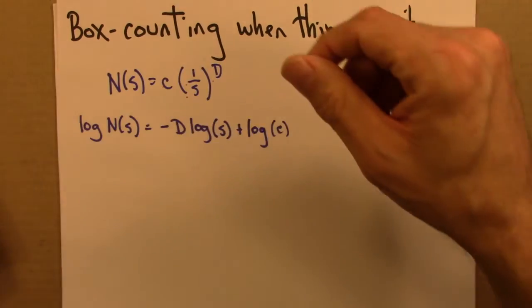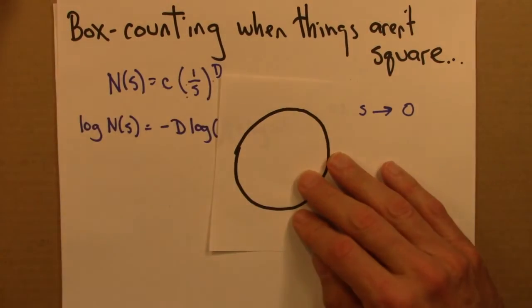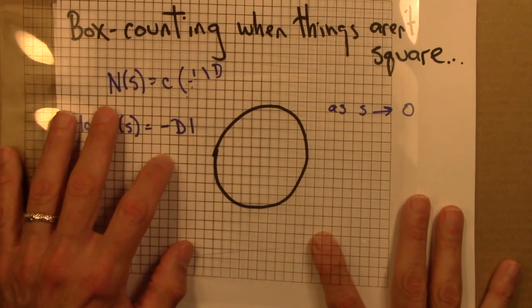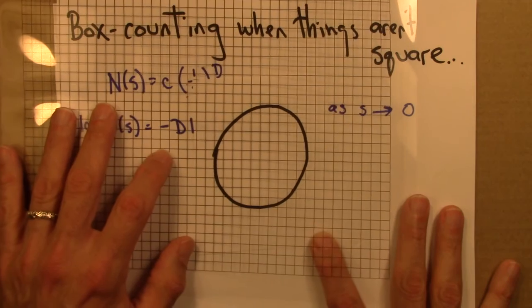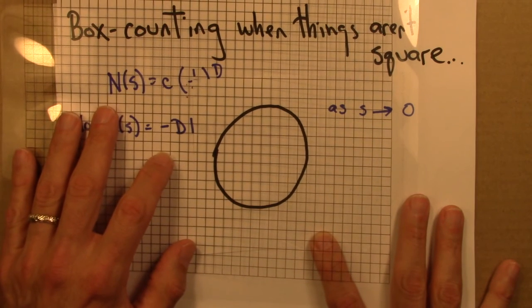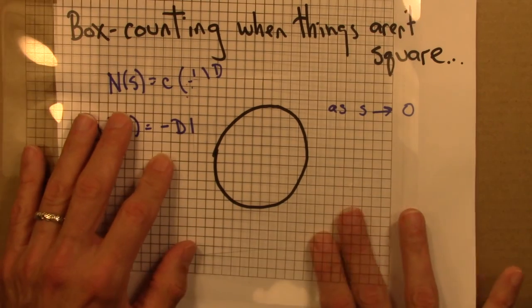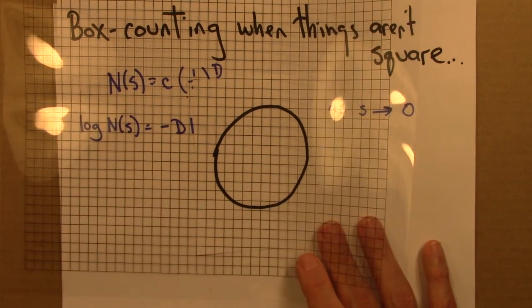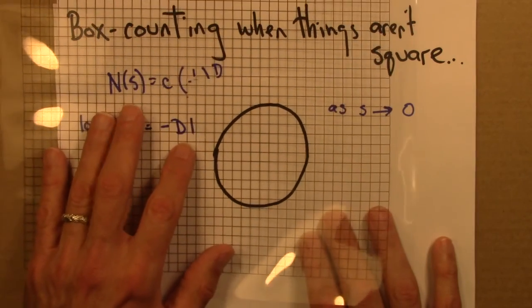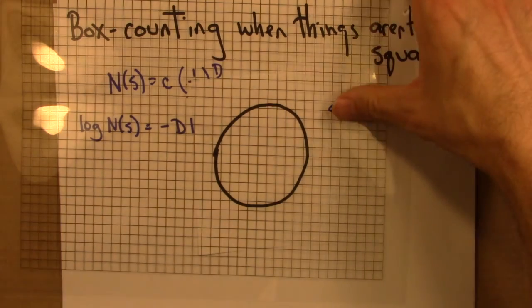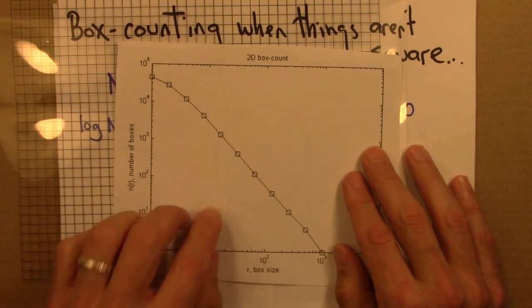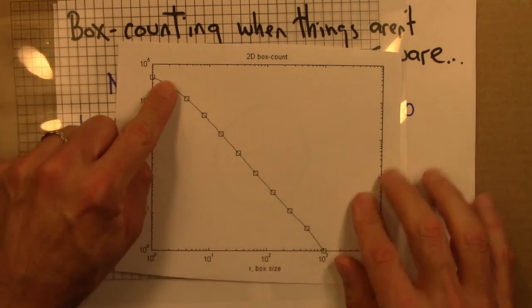One other issue that comes up in box counting that I want to mention briefly is that when I'm laying a grid down on a circle or some blob like this, I have a choice about exactly where I place that grid. And depending on the exact placement, I might have a larger or a smaller number of boxes. So that's another source of error. If one really wanted to get a good estimate for the dimension and some error bars, some uncertainty with it, one thing to do is to try a bunch of different box placements. And maybe then use all of those. And then that can give you an error bar. When you get error bars on each of these points, you can get a range here. And then you can use that to get some sort of range or error bars on this.